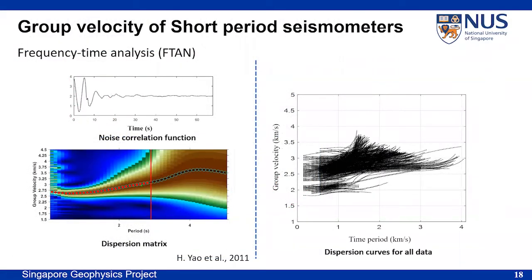We then use frequency-time analysis to extract group velocity from the noise correlation function of each station pair. For each period of interest, we use a period-dependent window between certain group velocities to window the empirical Green's function in the time domain. Then the windowed empirical Green's function for that period is narrow-band-pass filtered, and we can get dispersion curves by picking up the maximum amplitude in these dispersion maps. The group velocity from all station pairs will be used in tomography in the next step.